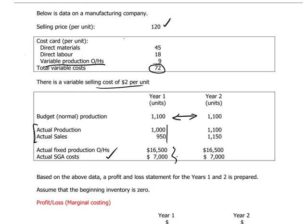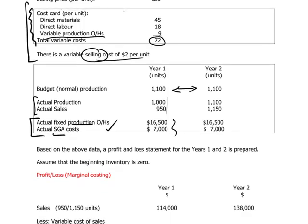Notice how the cost data is presented. We have all the variable costs grouped upstairs, both production and non-production. And down below, we have the actual costs, which are both production-related and non-production-related. The reason this information is organized this way is so we can use it to build a profit and loss statement under the marginal costing system. Marginal costing is focused on the variable costs in connection with producing and selling a unit.